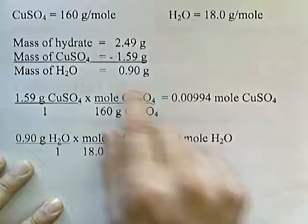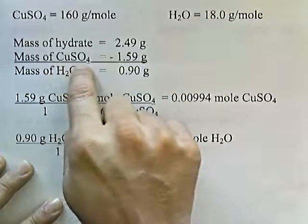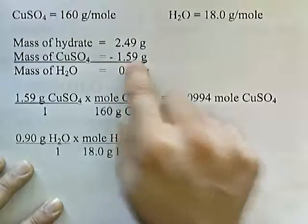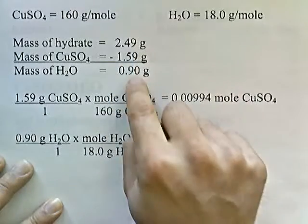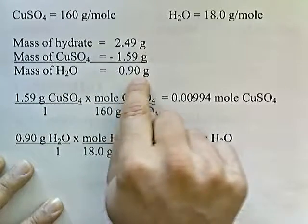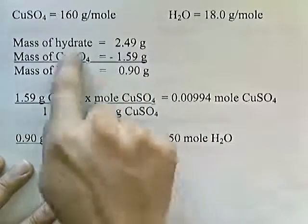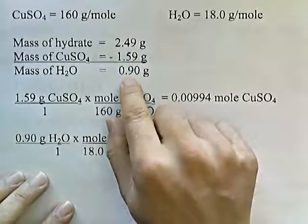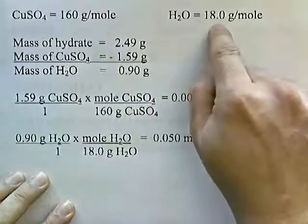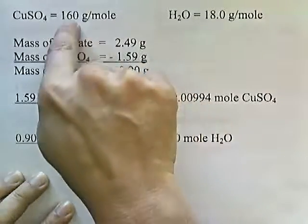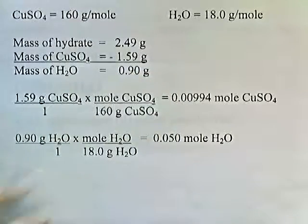The mass of the copper sulfate by itself after the water has been removed is 1.59. So if we subtract these two, that will give us the mass of water. So we have 0.90 grams of water trapped within the hydrate crystal. Notice this is two significant digits. Now we're going to take the mass of water divided by 18 to get the moles of water, and take the mass of the copper sulfate and divide it by 160 to get the moles of copper sulfate.